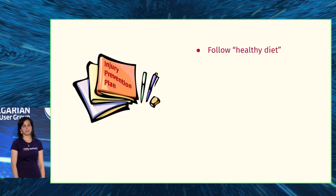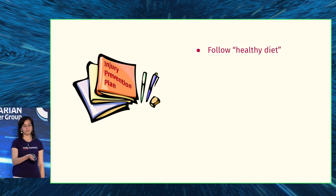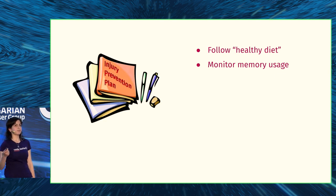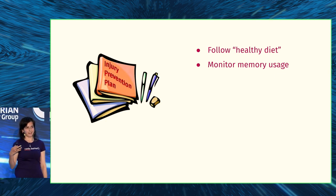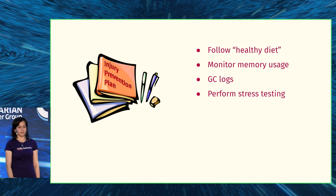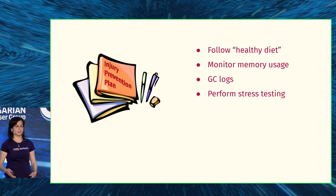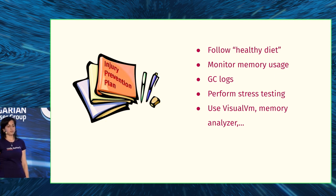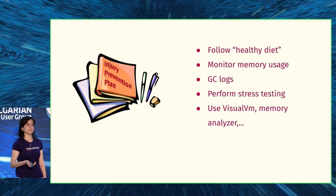Here are a few small tips to prevent potential leaks. First, follow a healthy diet. Then monitor memory usage — from time to time, look at how much memory you are using before there is any problem. Look at GC logs, perform some stress testing. In our case, we can try to execute analysis on unusual inputs or bigger projects like OpenJDK or other compilers — they will find more places where we have problems. Use tools like VisualVM, Eclipse Memory Analyzer, and maybe Flight Recorder.